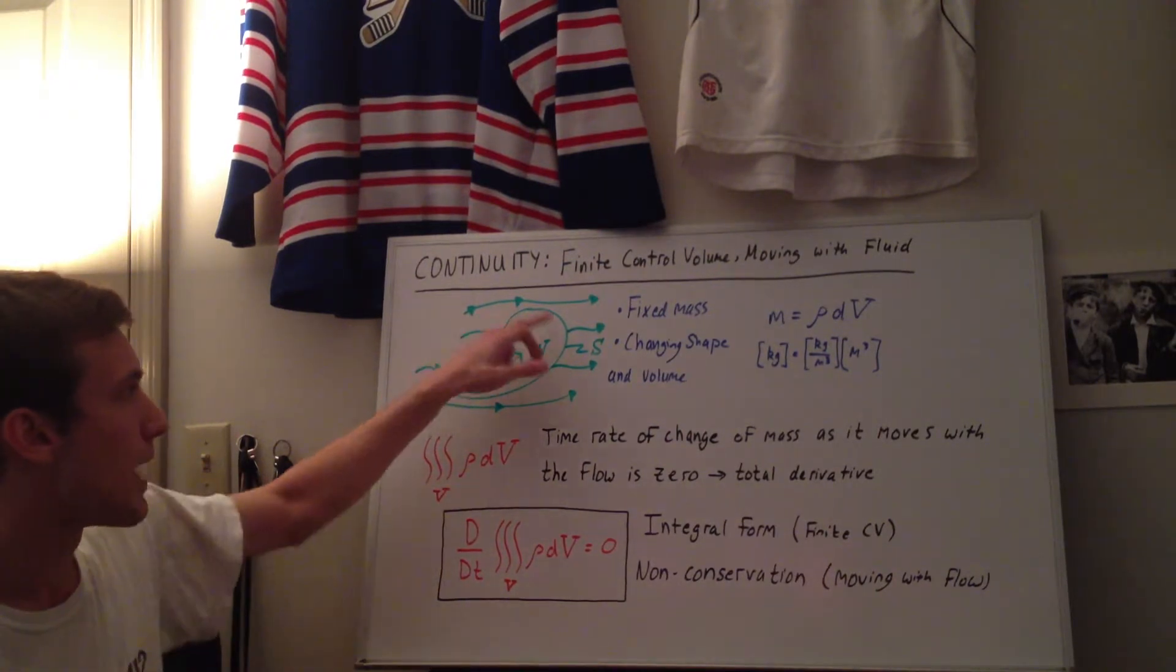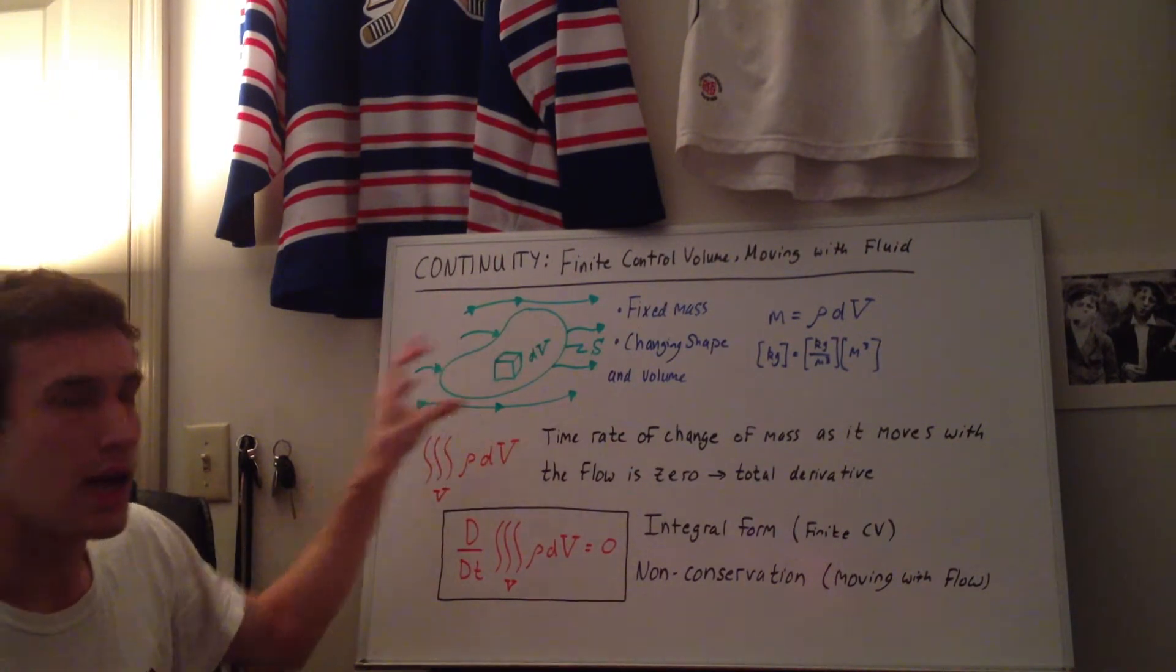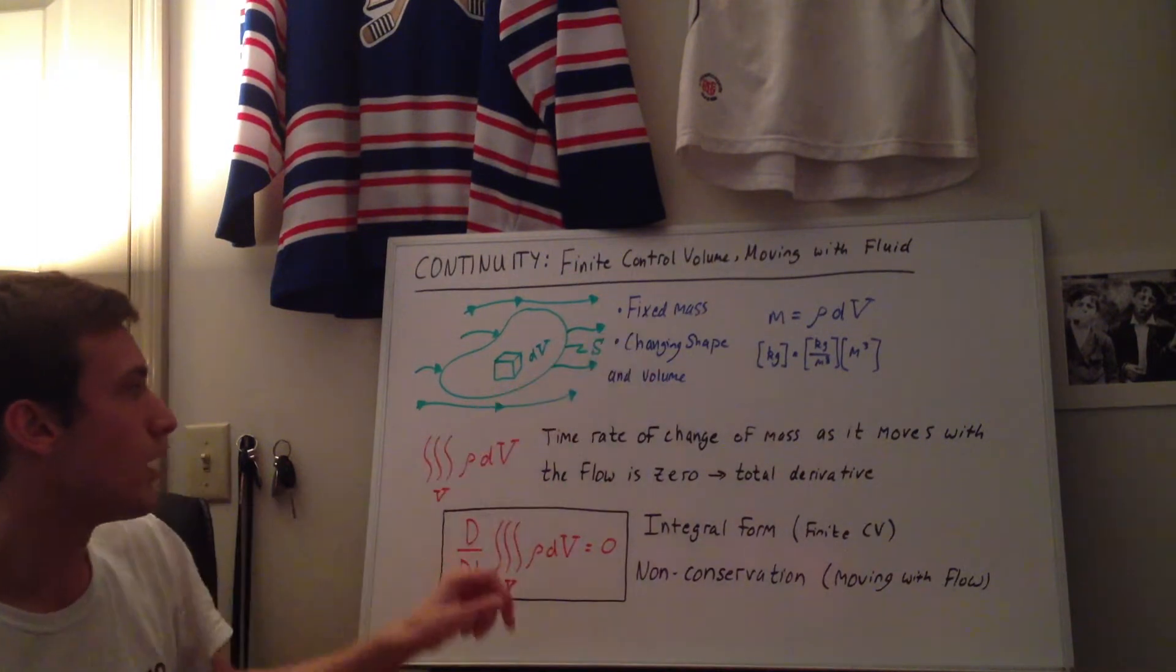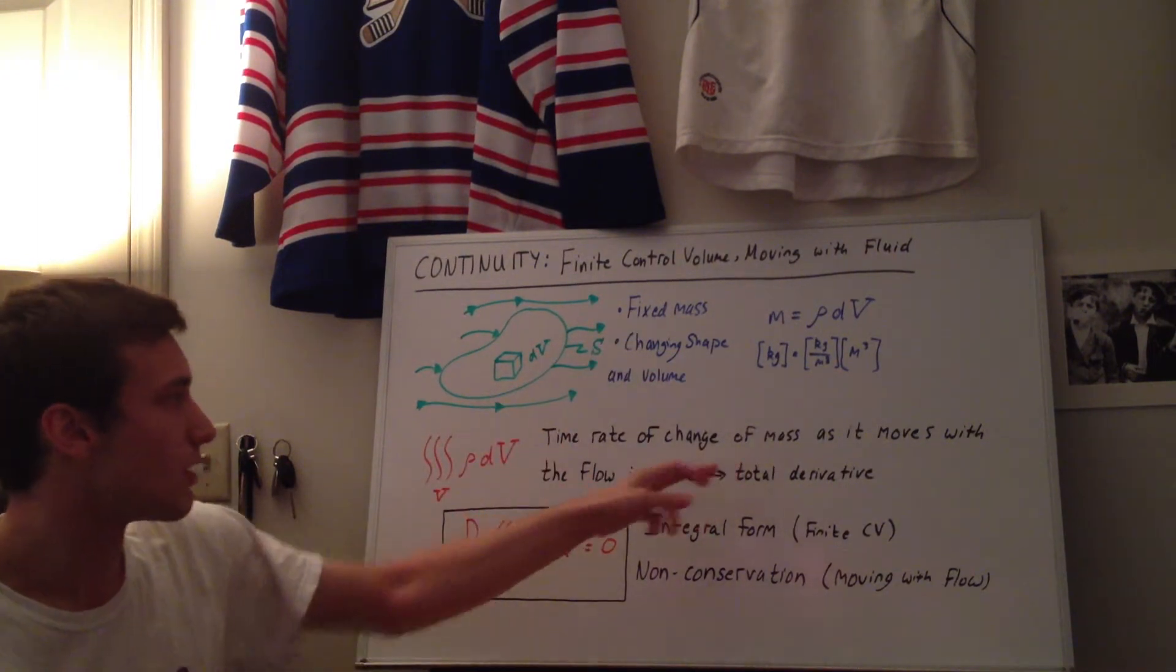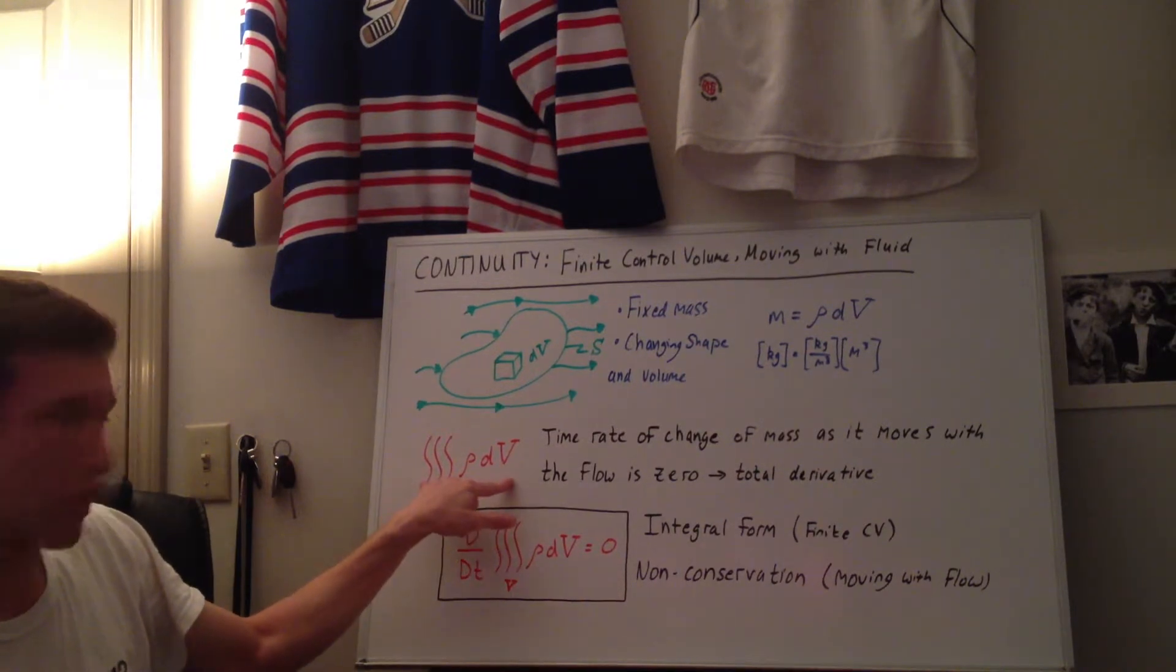So that's the total mass. This stands for the total mass inside this finite control volume as it's moving with the flow. And that can't be changing, because we have a fixed mass. So the time rate of change of the mass as it moves with the flow is zero.